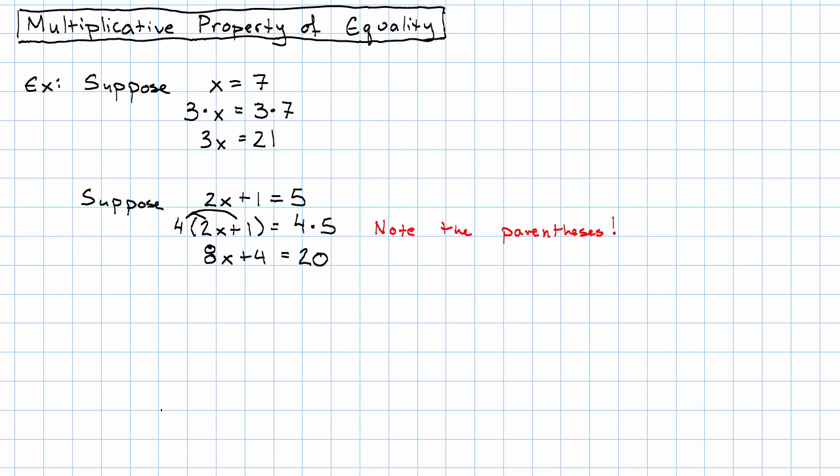Let's make sure that that really worked out. Let's make sure these equations really are equivalent. Looking at this first equation, we can see that I think we can guess that x probably represents the number 2, because 2 times 2 plus 1 does in fact equal 5.